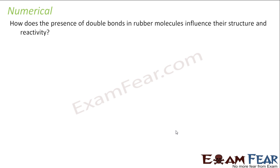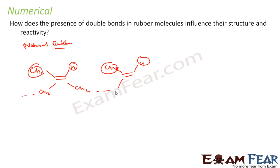The last numerical: how does the presence of double bonds in the rubber molecules influence their structure and reactivity? See, if you talk about the rubber polymers, if you talk about the natural polymer, this is natural rubber. Natural rubber is a polymer of a monomer, that is cis-polymer of isoprene. This is how it is: cis-2, cis-2, you form bond, again bond, again bond, bond for you, like this.